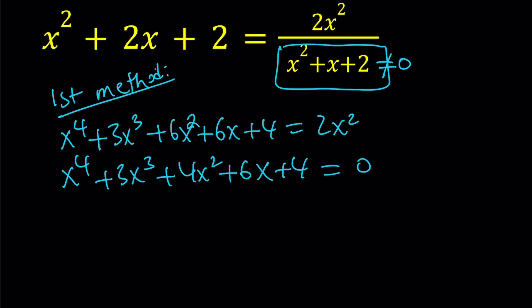But anyways, one thing that I'd like you to notice here is the following. Let's go ahead and first of all write the coefficient of x to the fourth as 1 and then notice that 1 plus 4 plus 4, which is 9, is equal to 3 plus 6. That basically means that the sum of the coefficients of odd powers of x equals the sum of the coefficients of the even powers of x, which implies that x equals negative 1 is a solution, which implies x plus 1 is a factor. So, that's kind of nice, right?